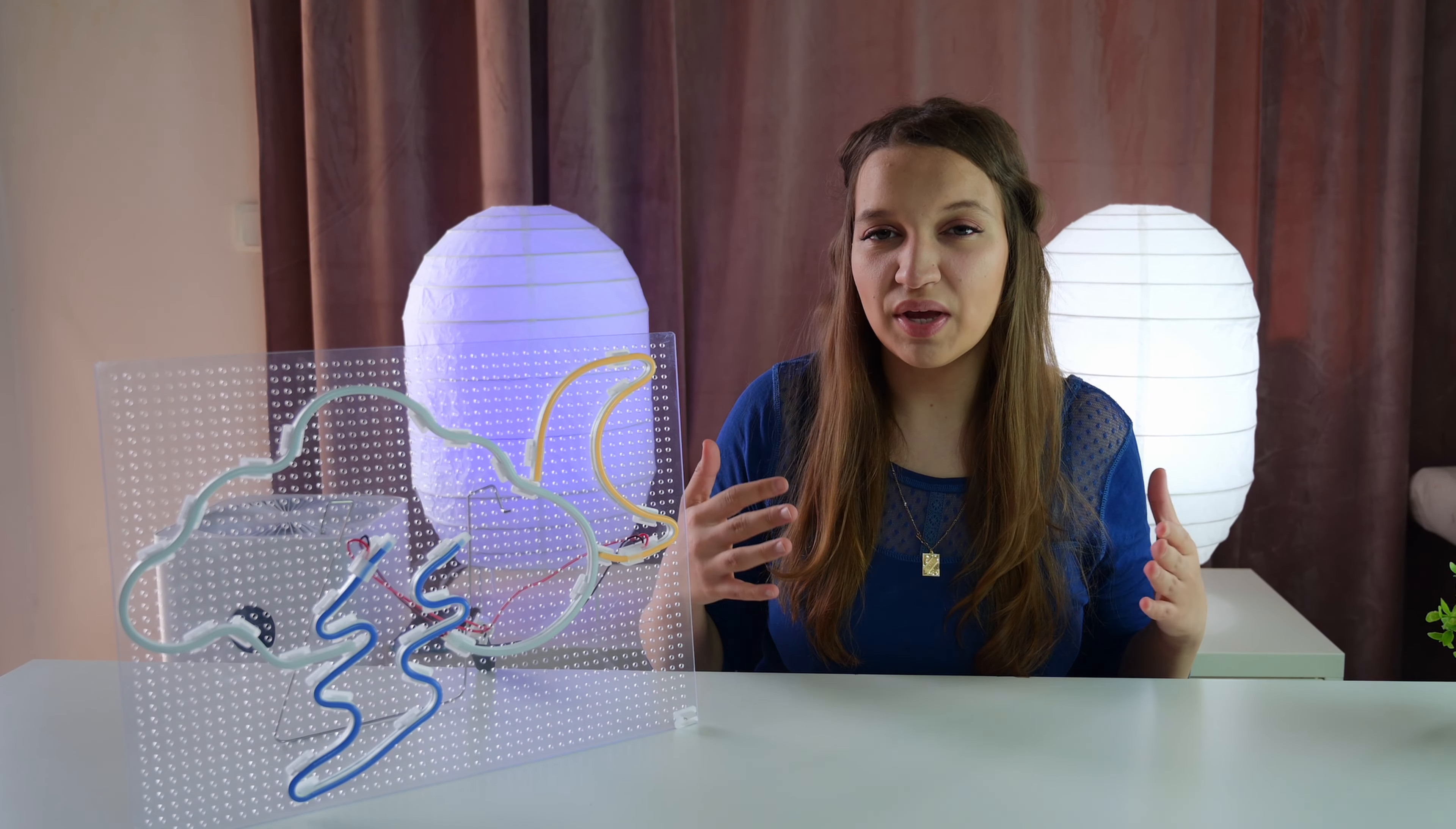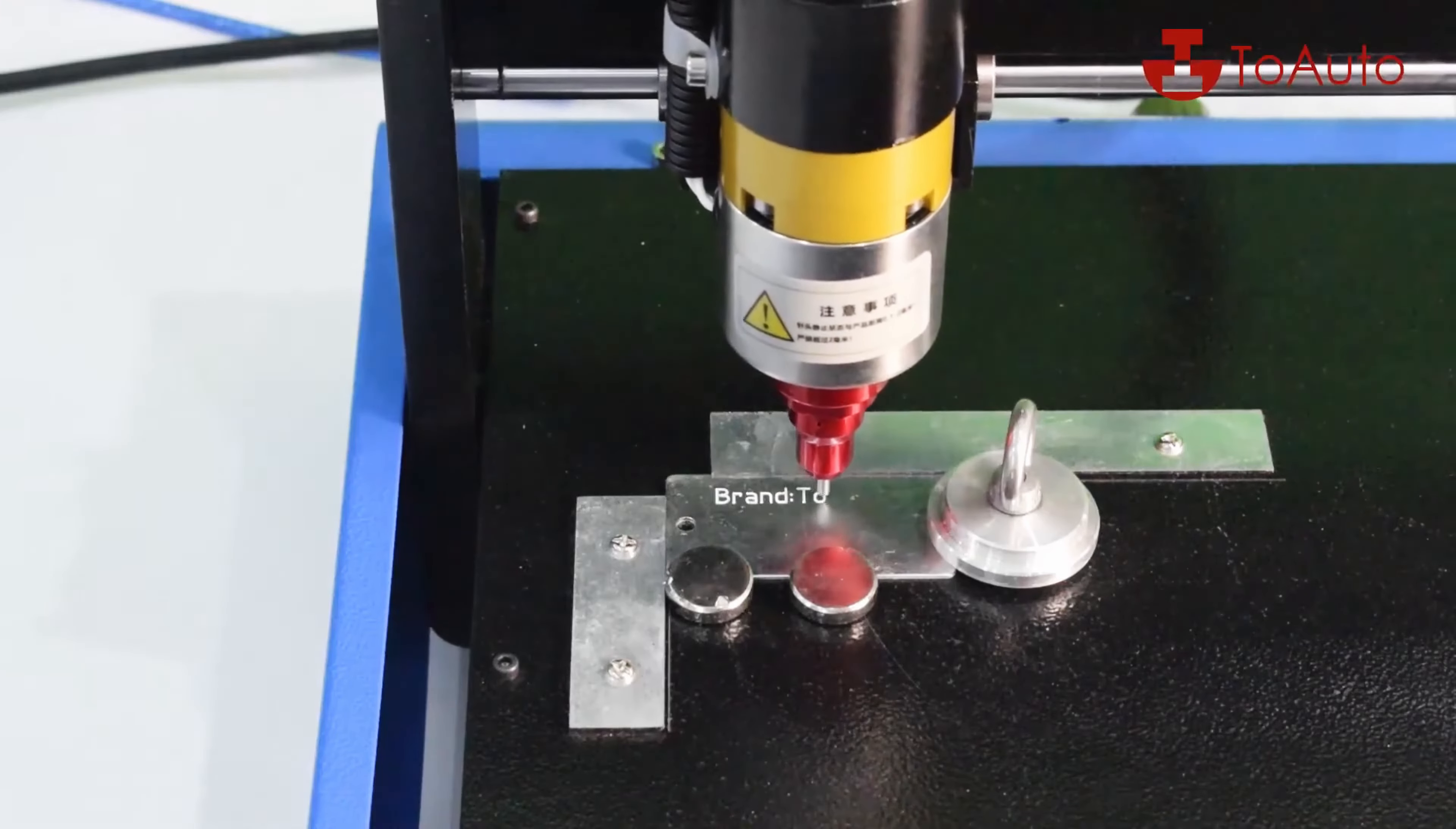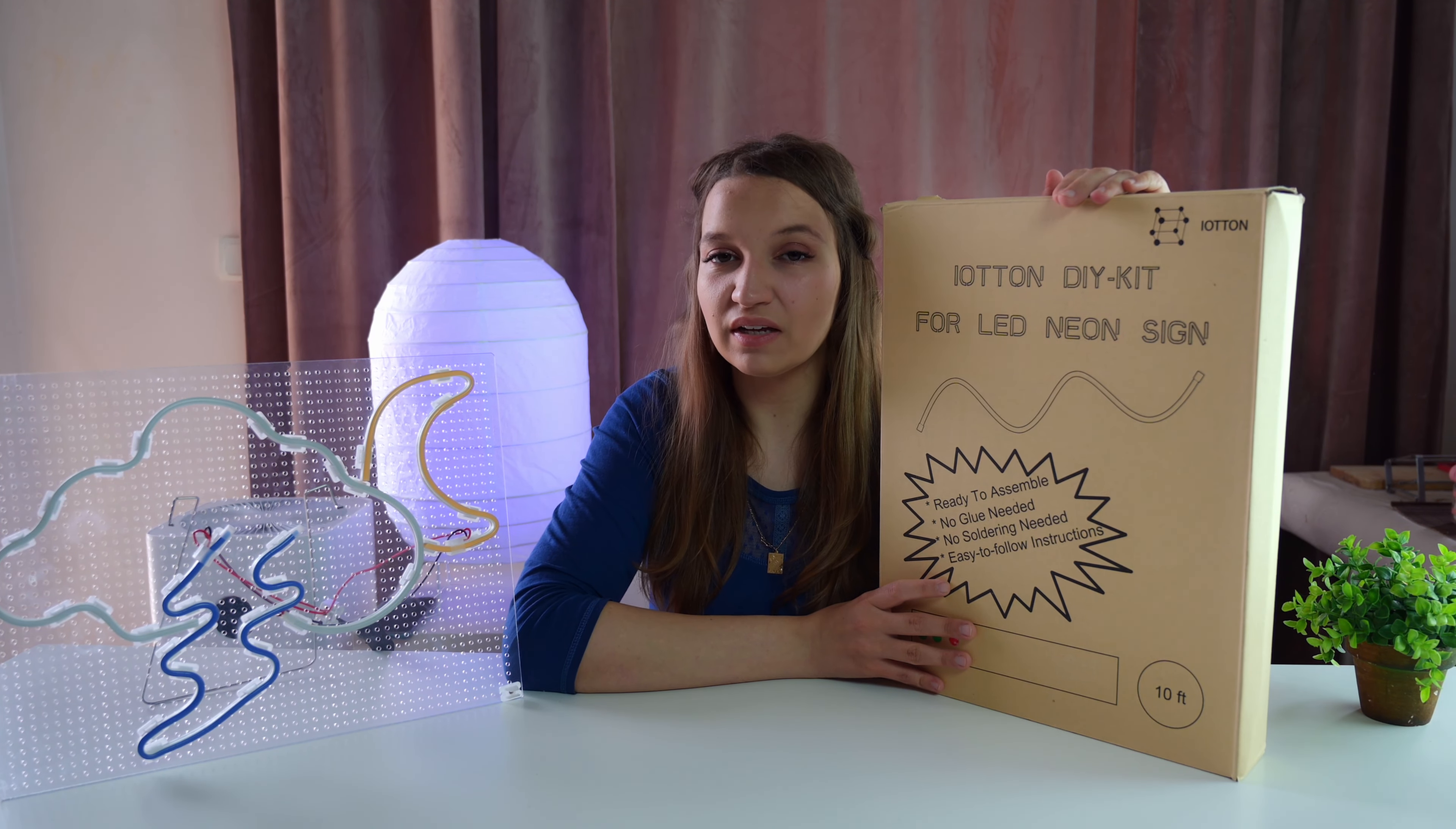You might think that making a neon light sign like this is complicated. You need to blow glass, have engraving machine or soldering wires. But with Jotun's do it yourself kit you need none of that. All you need to follow is a 5 step procedure and you will be able to make a beautiful neon light sign like a pro.